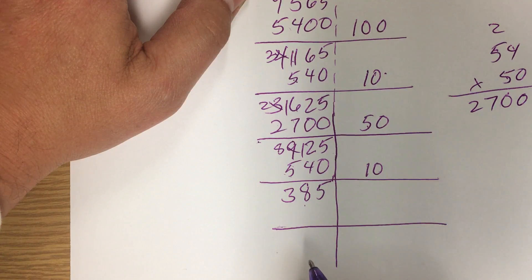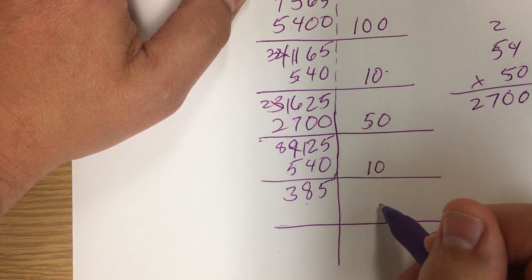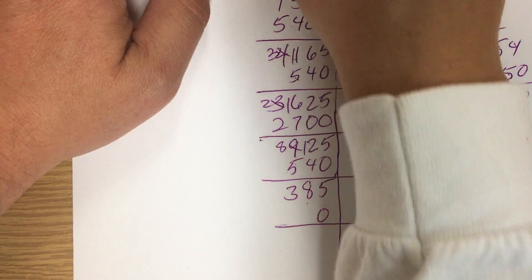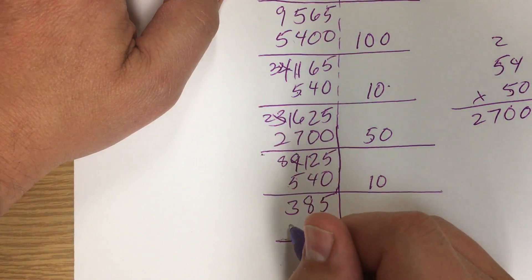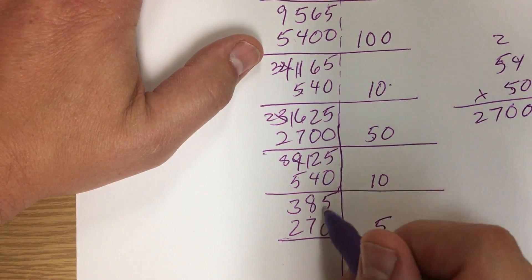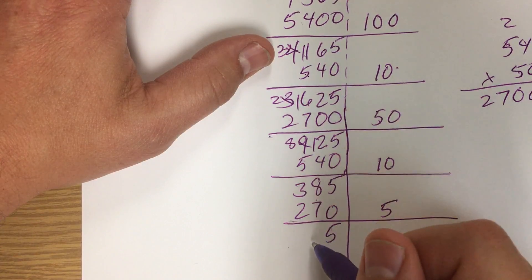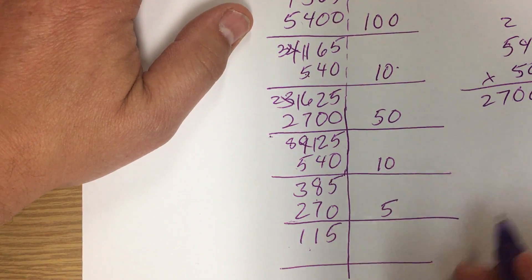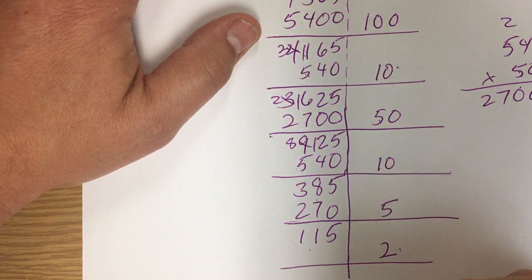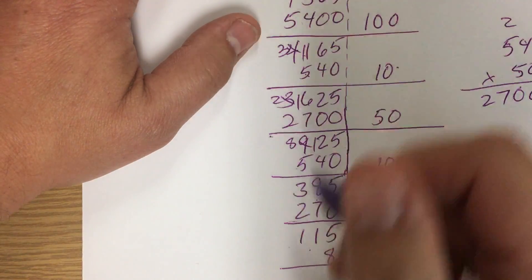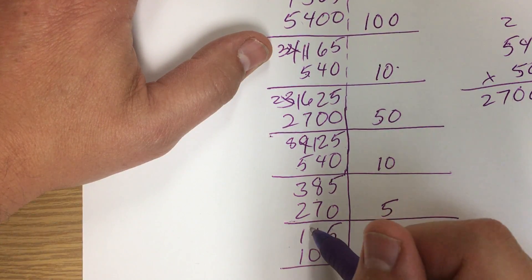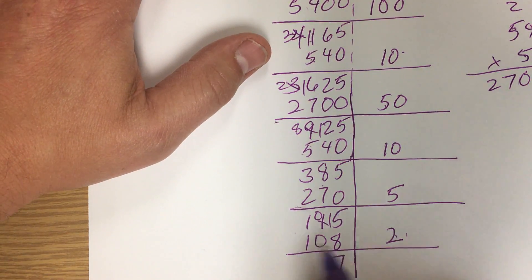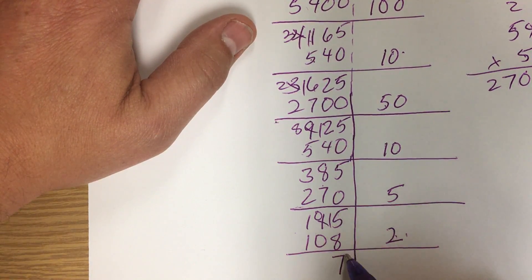It doesn't have to be exact as long as it's lower than this number. I'll go with 5: 54 times 5 — 5 times 4 is 20, carry the 2; 5 times 5 is 25 plus 2 is 27 — so 270. I subtract and have 115 left. I can take two more 54s out, so I put a 2: 2 times 4 is 8, 2 times 5 is 10 — that's 108. I subtract again and have 7 left. I can't take any more 54s out, so I have a remainder of 7.